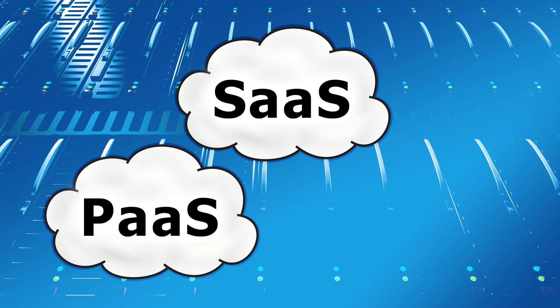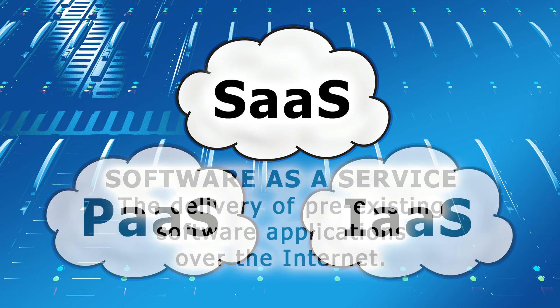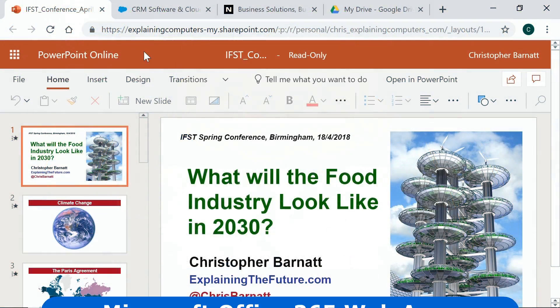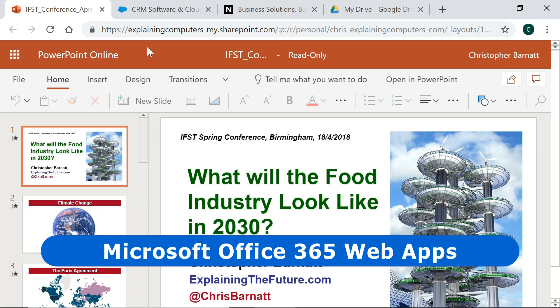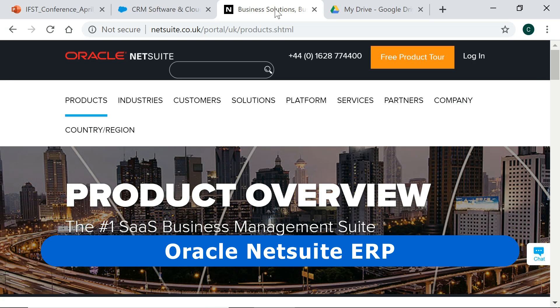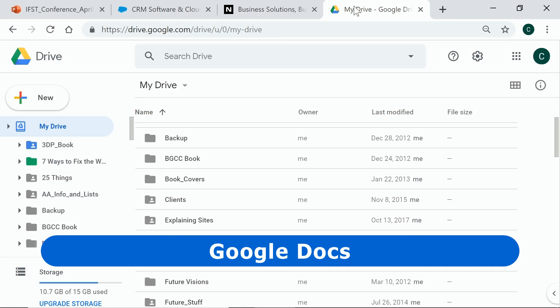Cloud computing has three key service models known as SaaS, PaaS, and IaaS. SaaS, or software as a service, refers to the delivery of pre-existing software applications over the internet. So rather than having an app installed on your local computer, you run it from the cloud. SaaS applications include the Microsoft Office 365 web apps, CRM software from Salesforce, ERP applications from NetSuite, and the Google Docs word processor.